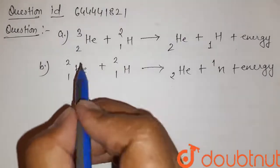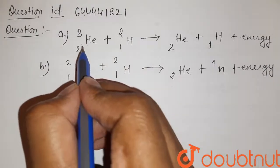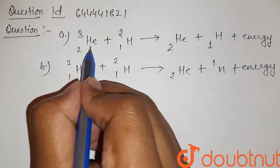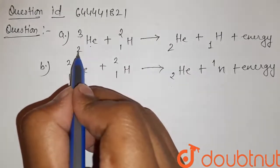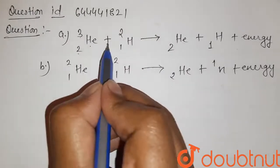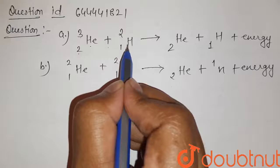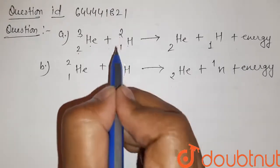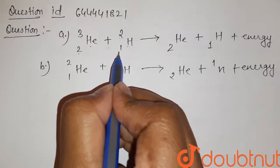So first of all, let me see first equation. Here in first equation, Helium, its mass number is 3 and atomic number is 2. It is added by this hydrogen, its mass number is 2 and atomic number is 1.